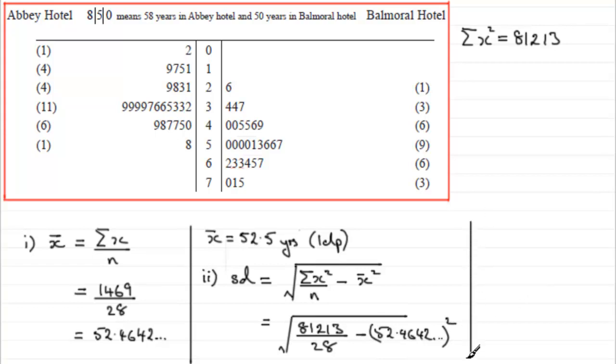Leave you to work that out. But what you should find is that you get the standard deviation equaling 12.164 and so on. So if you round that to one decimal place, that's going to be 12.2, and the units would be years, to 1 dp.